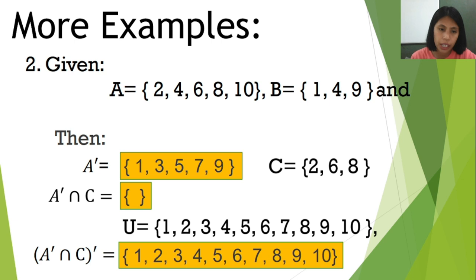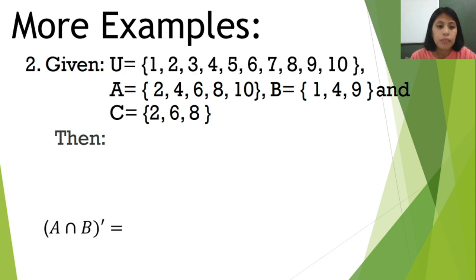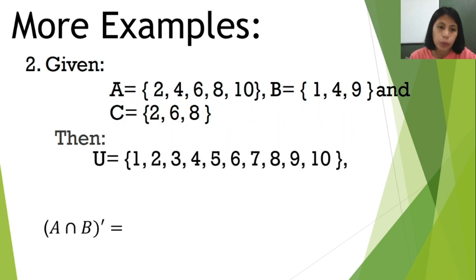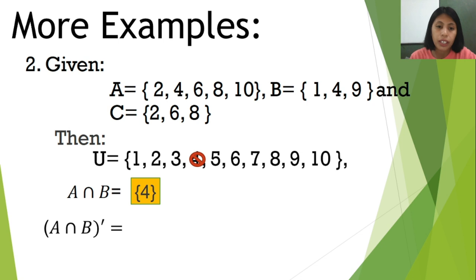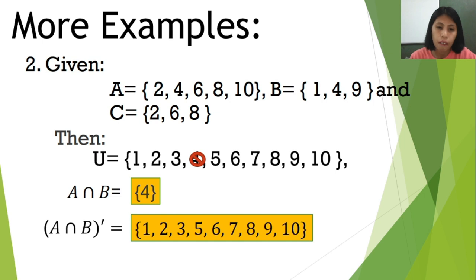Next, we have the complement of the intersection of A and B. We already found the intersection of sets A and B is {4}. We use the universal set and remove 4 from it. The remaining elements — the complement of the intersection of A and B — are {1, 2, 3, 5, 6, 7, 8, 9, 10}.